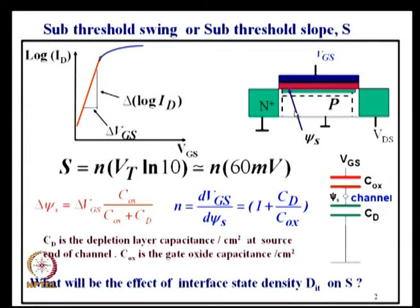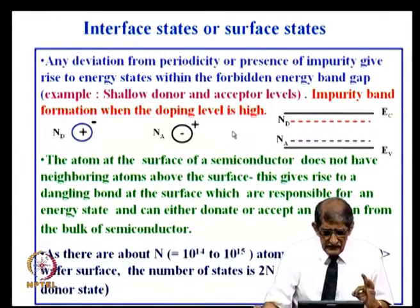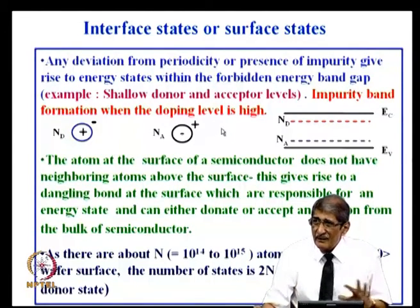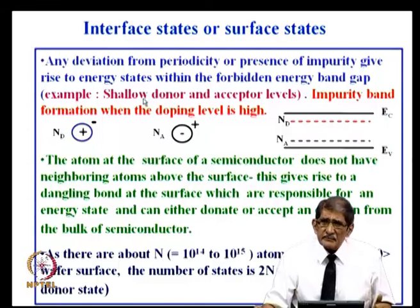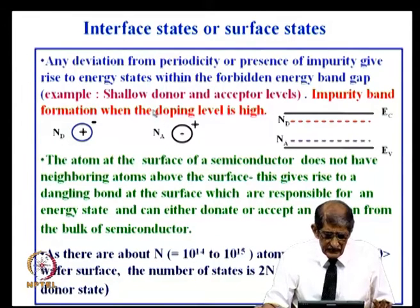Now, we want to see the ideal situation where there are no surface states. But in fact, you have interface states — interface state density exists between the oxide and silicon. Particularly if you are talking of high-k dielectric, it will be significant. So we have to see what the effect of that will be. Just before going into that, I will give a quick glance at what is implied by surface state density and how it arises. Professor Noh Khan has already discussed some aspects of this; I will just quickly go through some additional things.